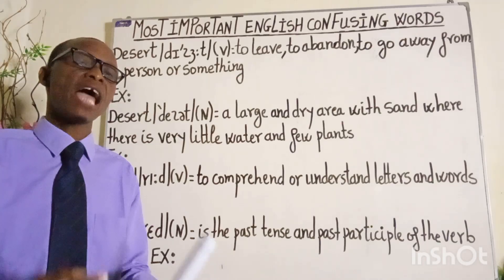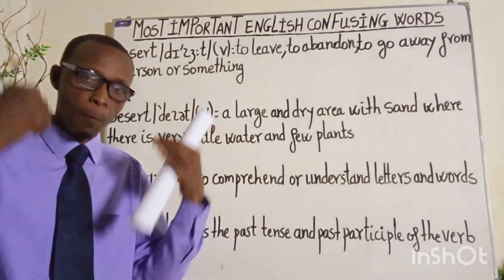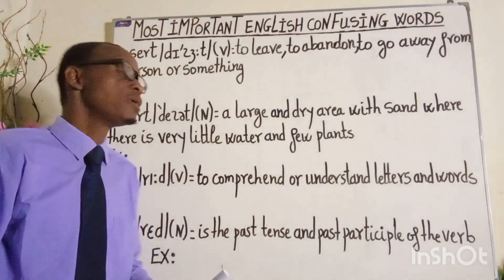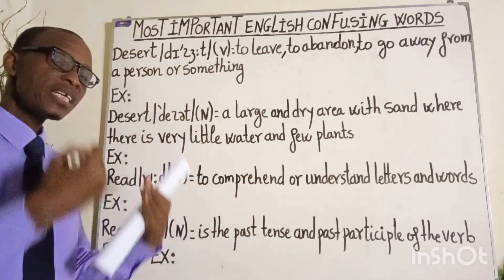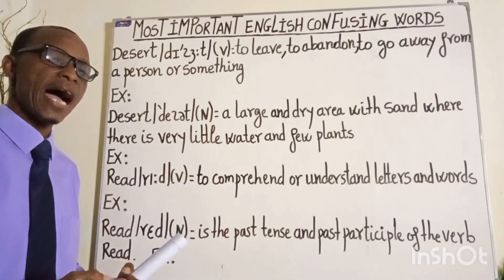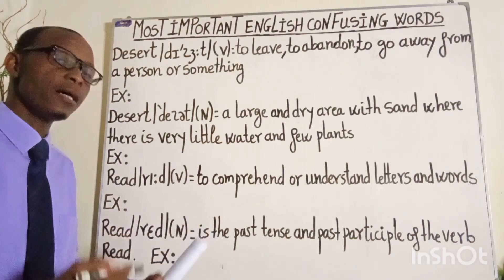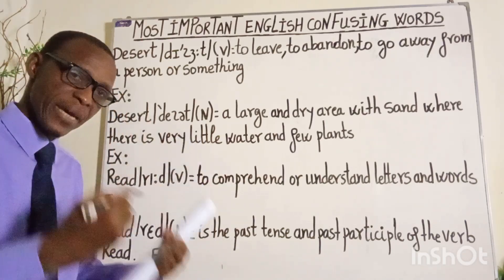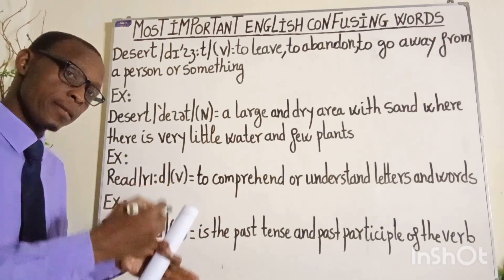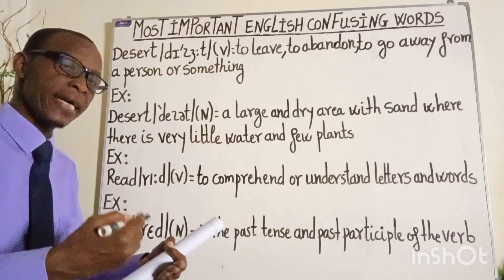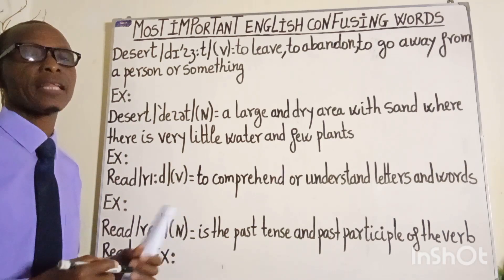For each word, I will give you its meaning, then I will use it in a sentence to explain it. Without more ado, let's get into details. When we take a look at these four words, they are spelled the same and sound the same. However, they are different in pronunciations and meanings — that makes them heteronyms. Knowing these will help and improve your English pronunciation, speaking, and listening. Now let's study them one by one.